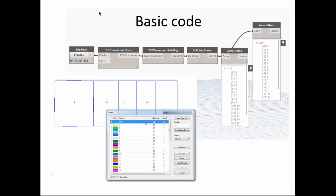Let's see the basic code. It is very simple. We just select file path. Once we have file path we open the document. Once we open document we select building. Once we have the building we get the zones. And from the zones we can select whatever we want. In this example I just took the names and the node which is checking if the zones are used.